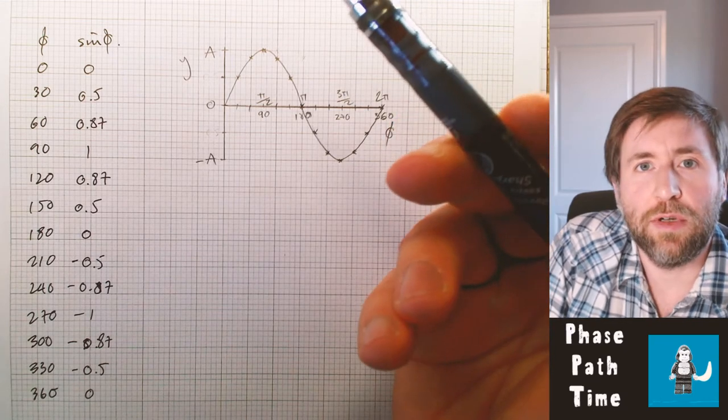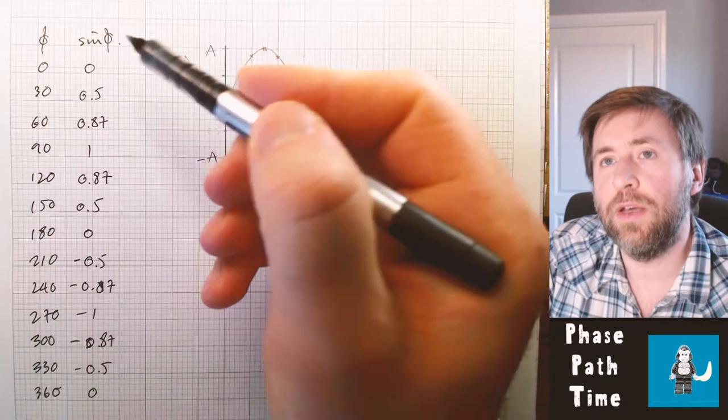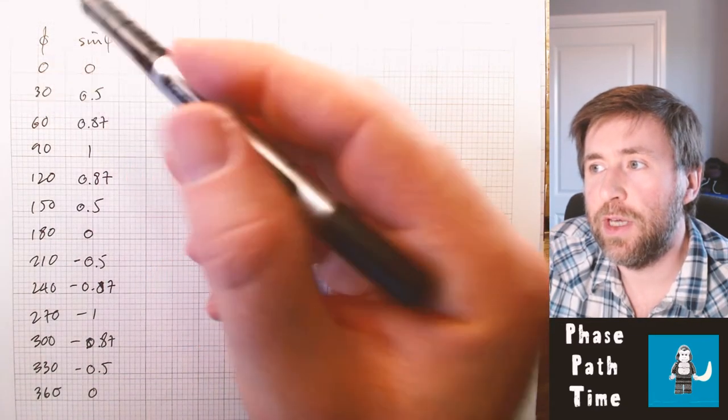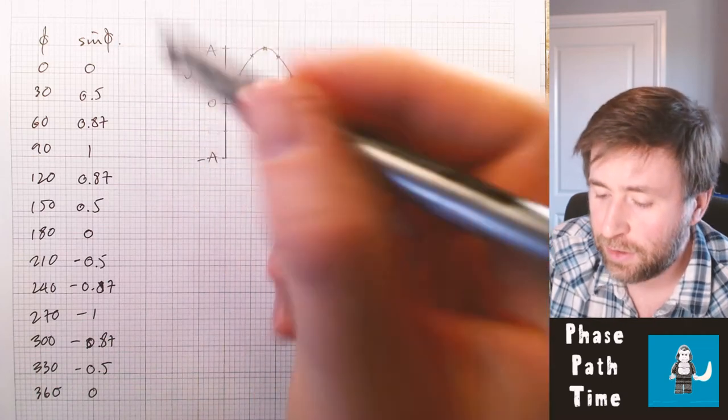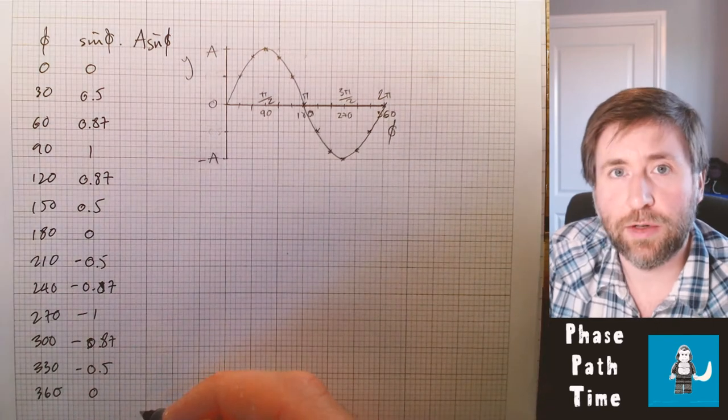So if I have an amplitude of 7, then I just multiply all these values by 7. If I wanted to plot a graph of the amplitude versus phase angle, then instead of having sine theta, I would have a sine theta as being my term, and I'd calculate all of those.